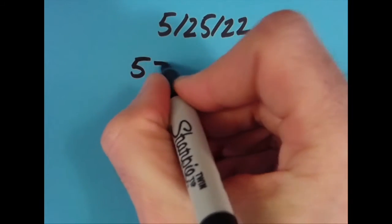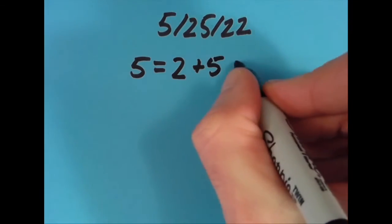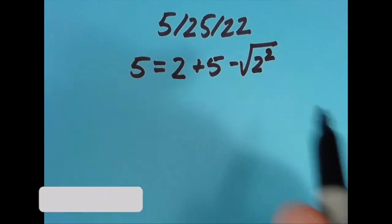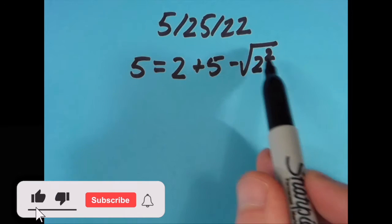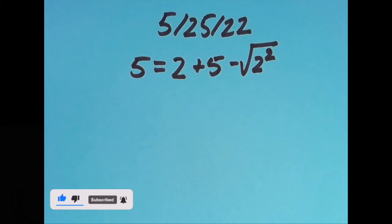So what I did was I said that 5 equals 2 plus 5 minus the square root of 2 squared. So 2 squared is 4, and the square root of 4 is 2. 2 plus 5 is 7, and 7 minus 2 gives us 5.